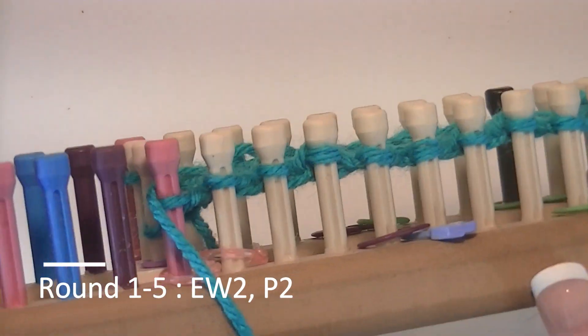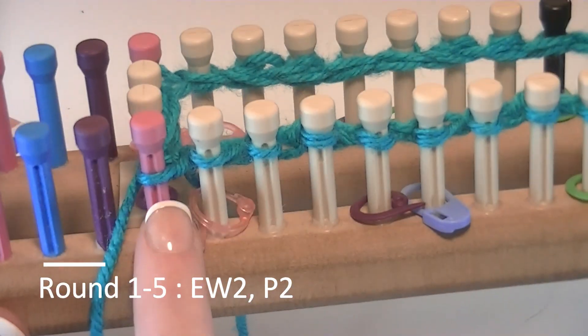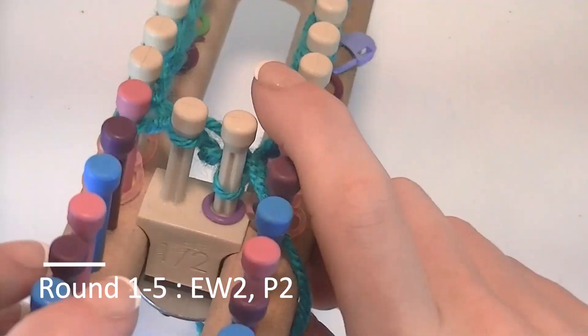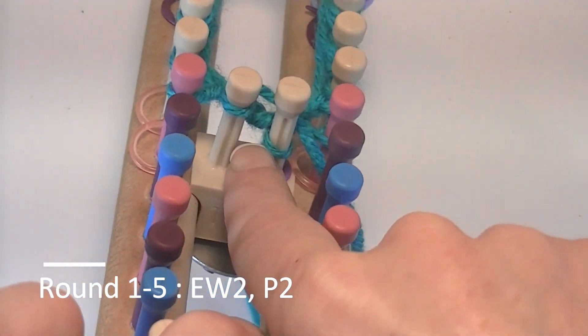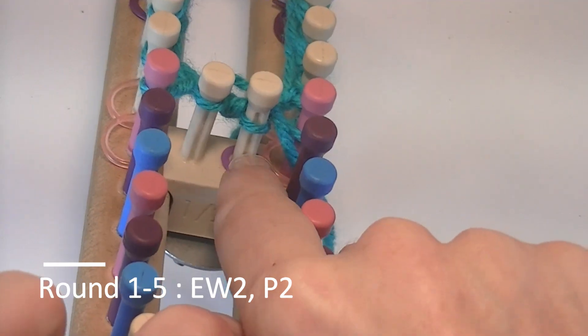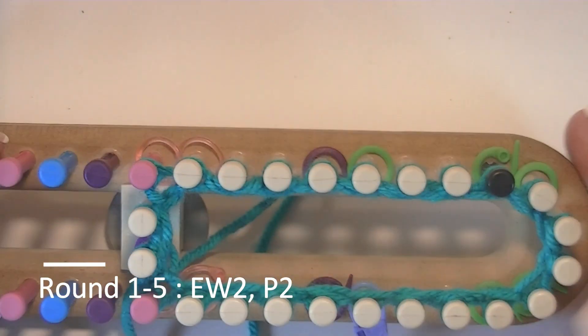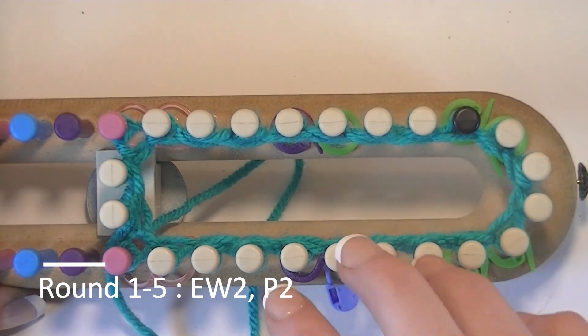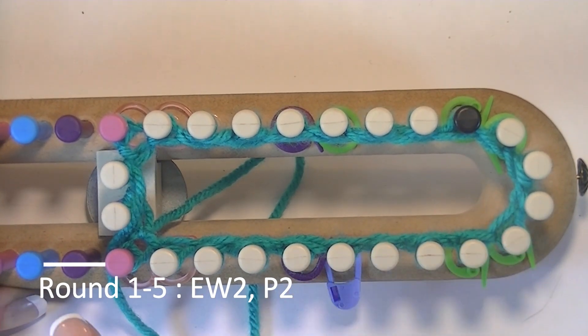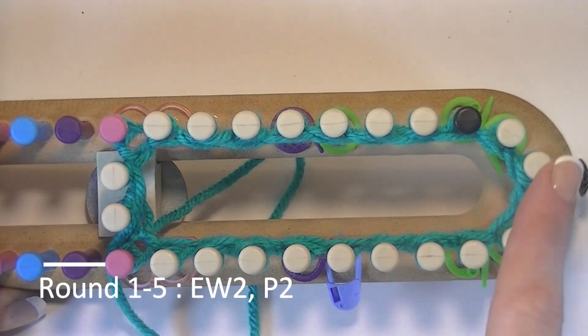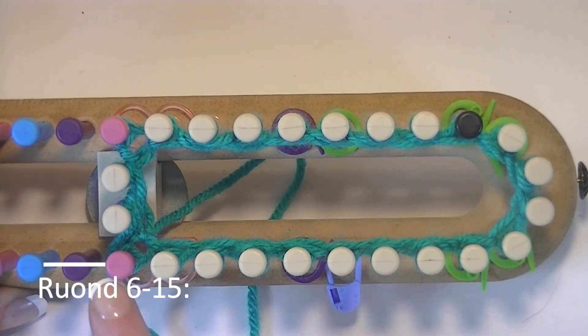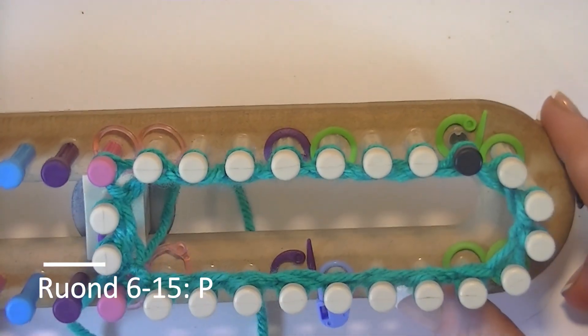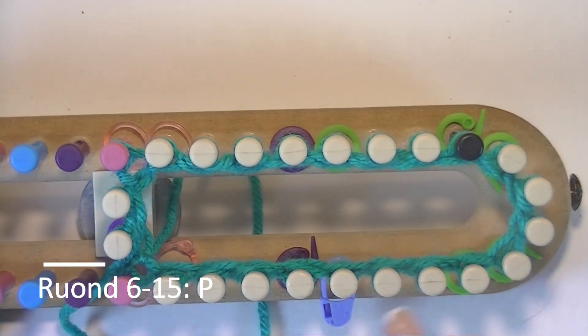Row one is complete. So all your marked pegs, you used your purl stitch. The unmarked pegs, you used the e-wrap. This one right here is just marked to let you know that's your very first peg of each round. So round one through five, you will be doing your double rib stitch, which is your e-wrap two, purl two. Round six through 15, go ahead and do just the purl stitch in the round.